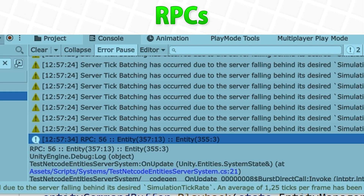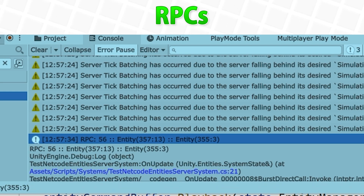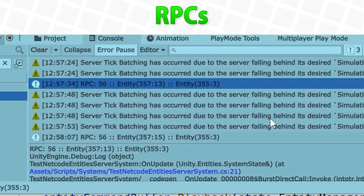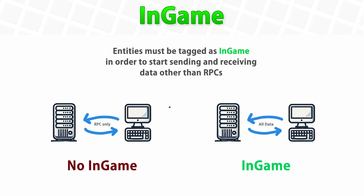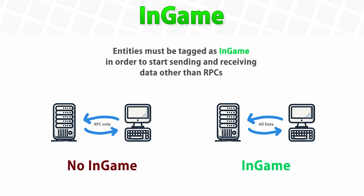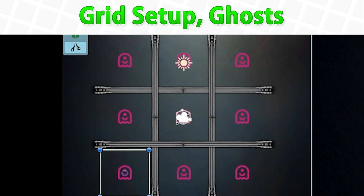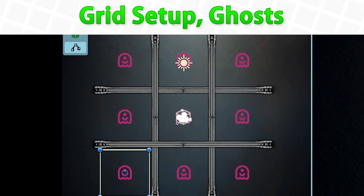RPCs are very simple messages. We're going to define the RPC, make a client system to send it, and a server system to receive it. Once we learn about RPCs, we can learn about the concept of in-game in Netcode for Entities — this is how we mark a connection as being ready to receive constant data like object spawning or a transform position. Then we're going to build our grid: a simple 3x3 grid with visuals and clickable grid positions.